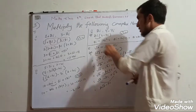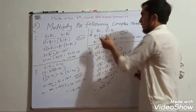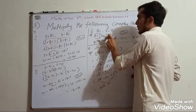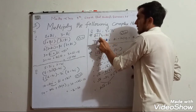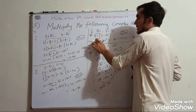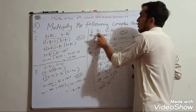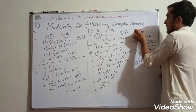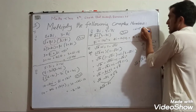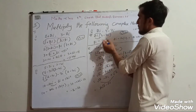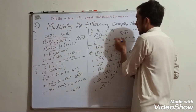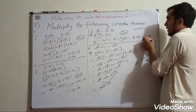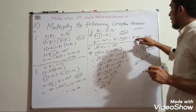Now multiply 2 iota by 4 minus 7 iota. 2 iota multiplied by 4 gives 8 iota. 2 iota multiplied by 7 iota gives 14 iota squared. Iota squared equals minus 1, so minus 14 iota squared becomes plus 14. Combining: 8 iota plus 14 iota gives 22 iota.